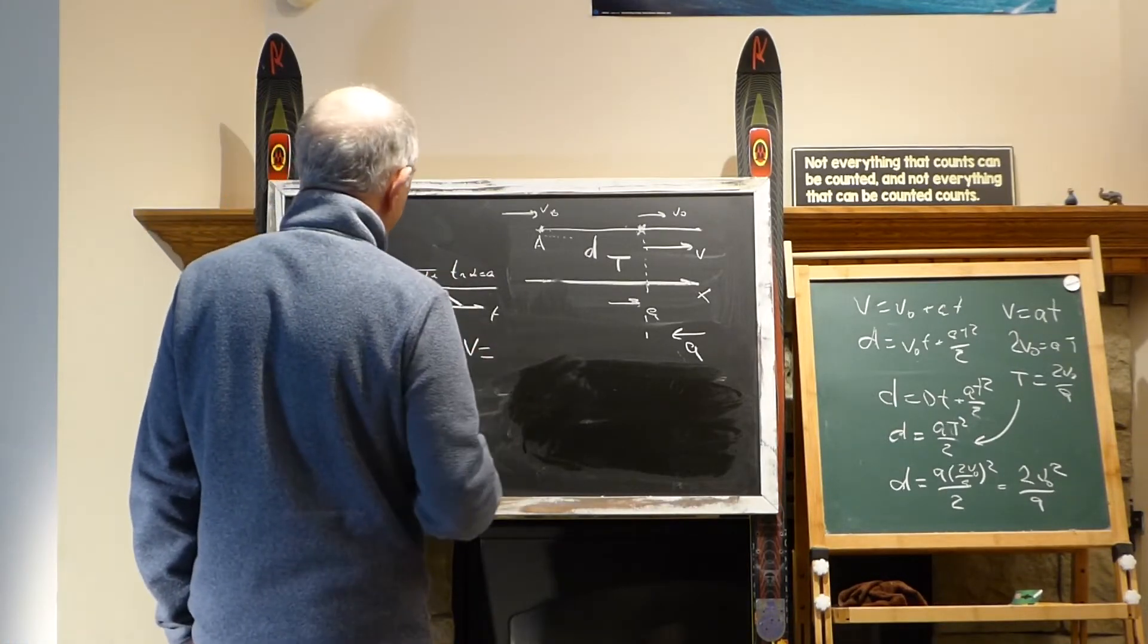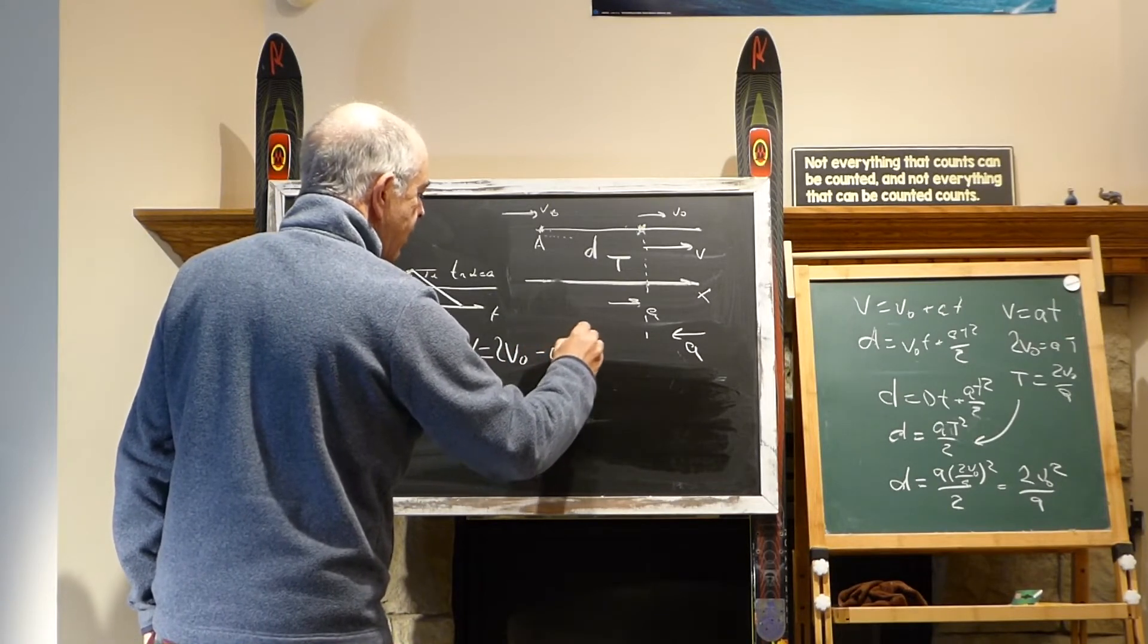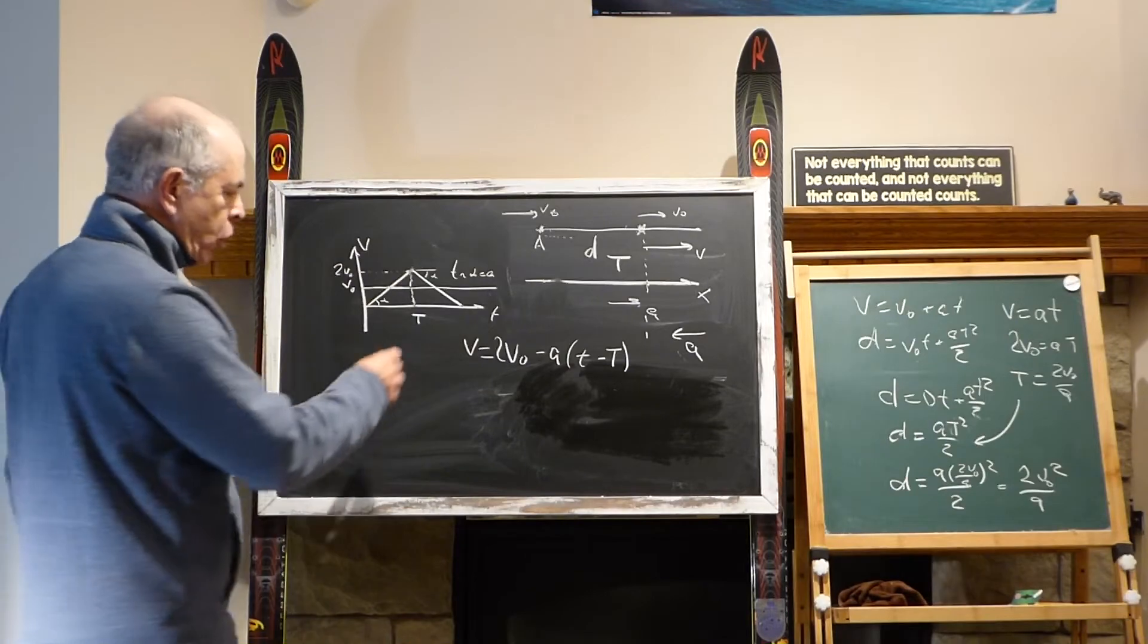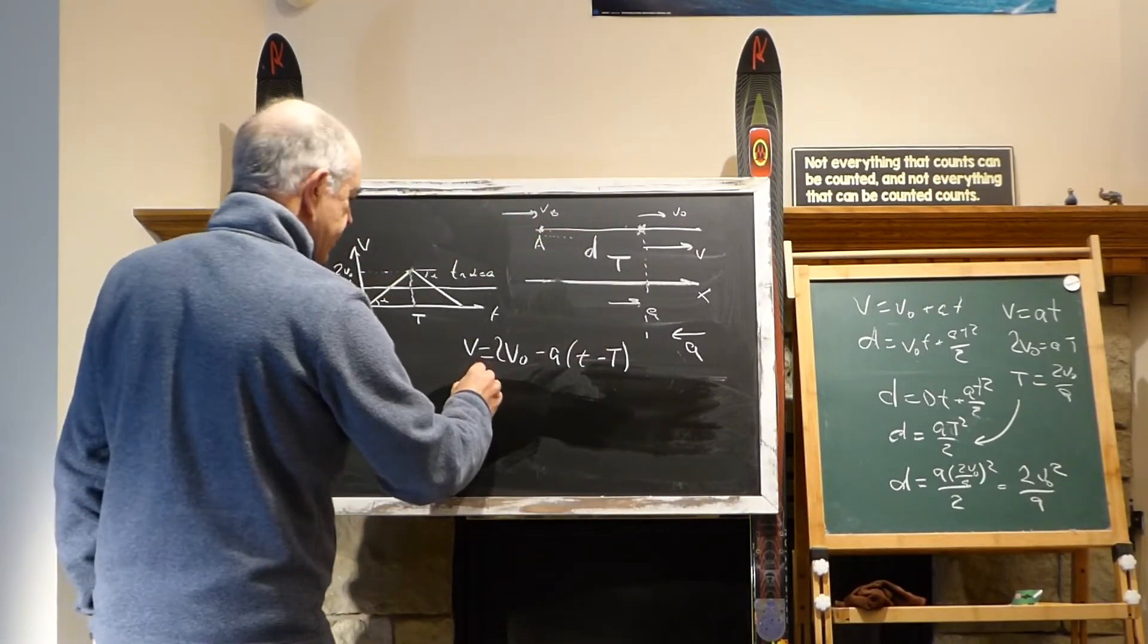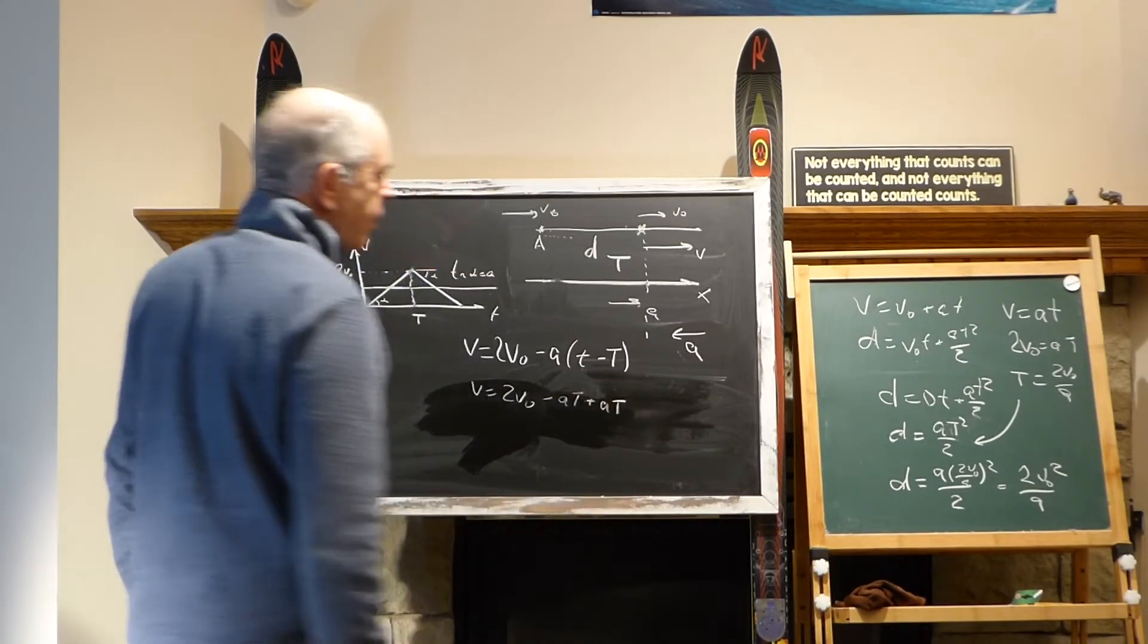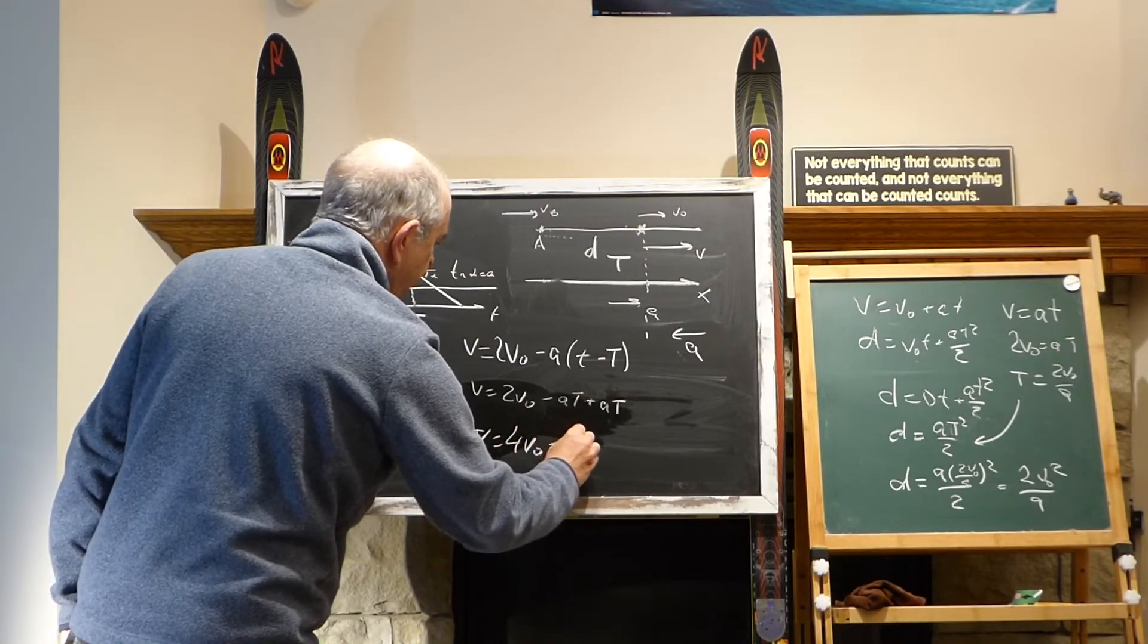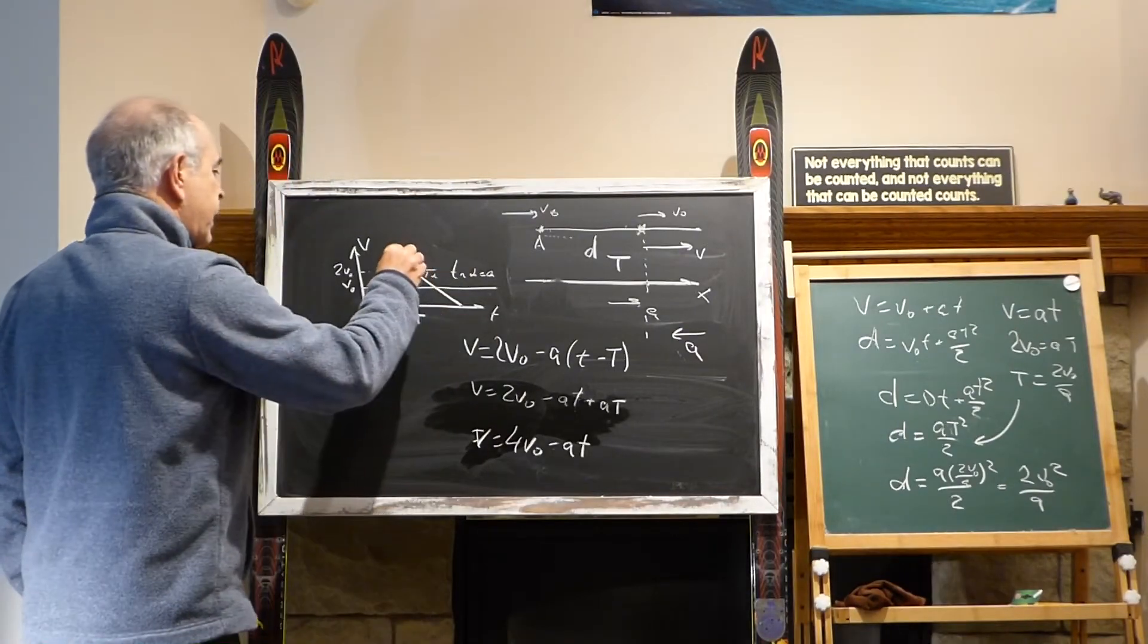The formula would be that it has 2v0 and then it would be minus a*(t - T). If t equals T, this disappears and this is 2v0. That's how the acceleration formula works. If we open the brackets we will have v equals 2v0 minus a*t plus a*T. We know that a*T is 2v0, so we have v equals 4v0 minus a*t. That's exactly the case.